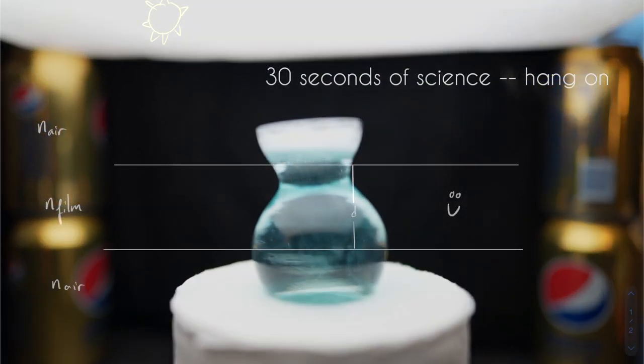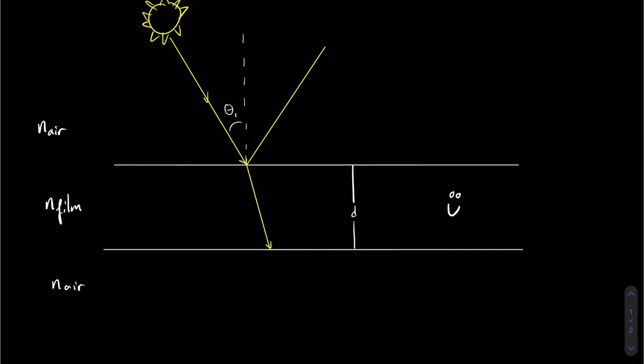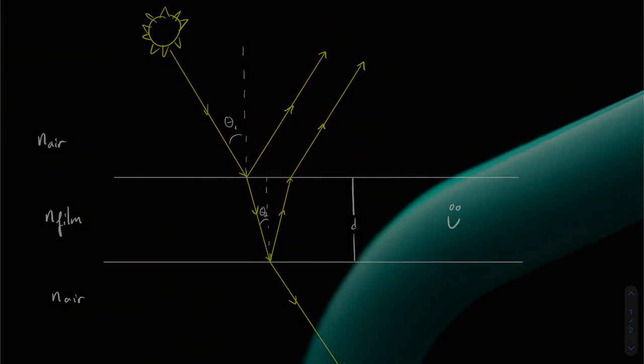What exactly is thin film interference? First, you have light incident upon a thin film — part of it is reflected, part is transmitted. At the second boundary, part is again reflected and part transmitted. That reflected light is then incident upon the first boundary, part of which is transmitted. Depending on the thickness of the film, light either interferes constructively or destructively, and that gives rise to the colors.